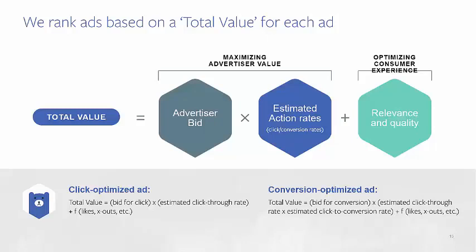So you have three components to define total value: advertiser bid, estimated action rates, and relevance and quality. If you like mnemonic devices, together these spell the word BEAR, which you can see in the bottom left of your slide. With the BEAR equation, you can understand how a relevant ad with a low advertiser bid can still have a high total value and be served, or a high advertiser bid paired with a low expected click-through rate or conversion rate can still result in a low total value and a losing auction. If your delivery is not meeting expectations, one of these components may be too low for your audience constraints.